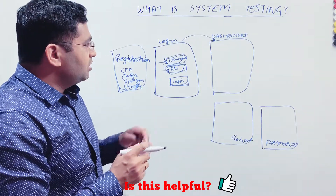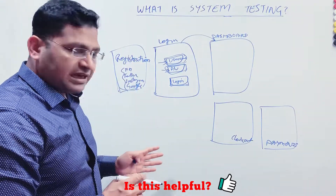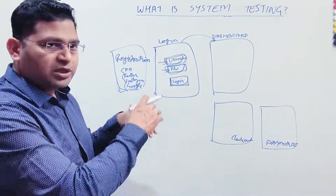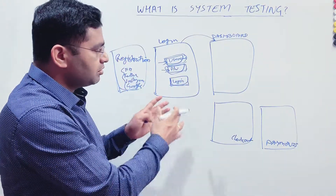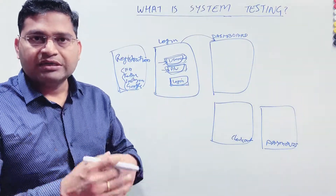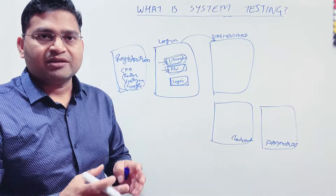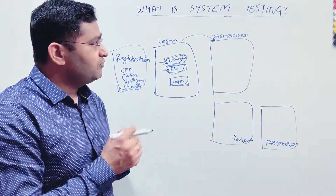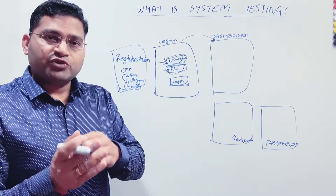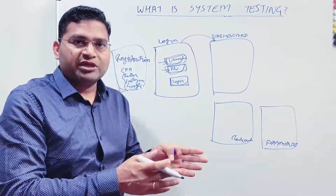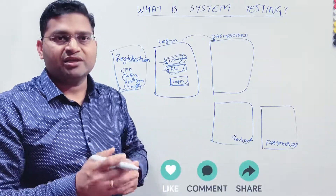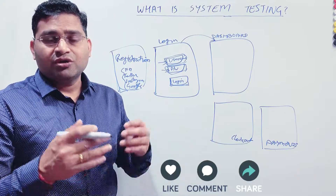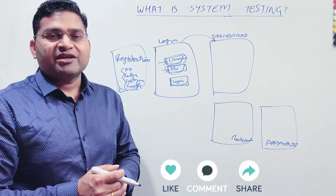That's basically how you can understand system testing — both in terms of the car manufacturing example and the e-commerce website example. When all these modules get integrated and you are testing as a whole, that is what system testing is in software testing. That's all for this tutorial. Hope this was helpful for you to understand what system testing is, and you'll be able to explain it easily to any interviewer in software testing interviews. Please do share and subscribe — thank you for watching.